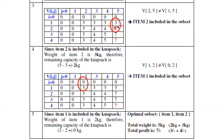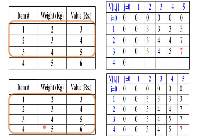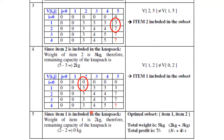Since item two is included with profit four, we subtract: 7−4=3. We look in the table for where profit three came from — item one provided profit three, and it is not present in the previous row, so item one is also included. The final answer: the optimal subset contains item one and item two. Total weight = 2+3 = 5 kg. Total profit = 3+4 = 7.